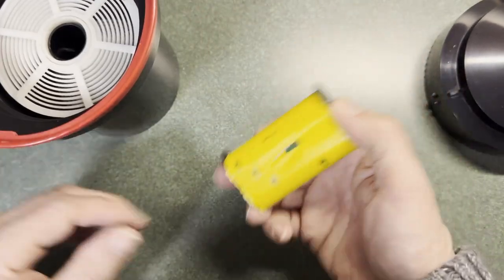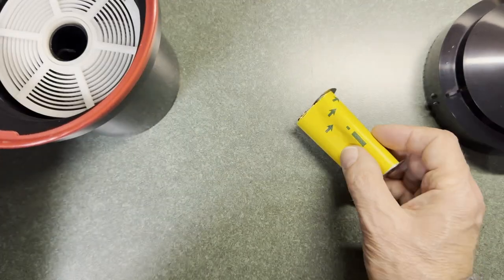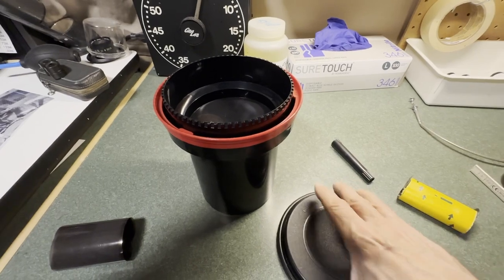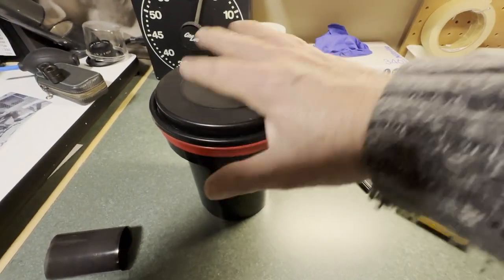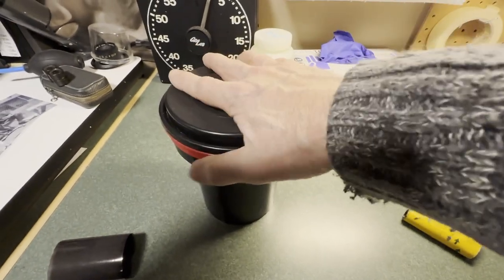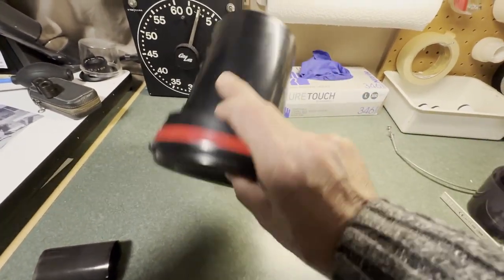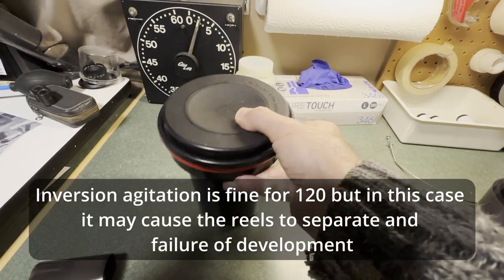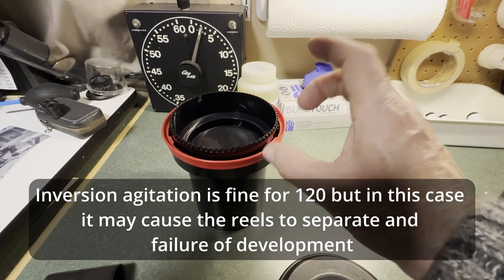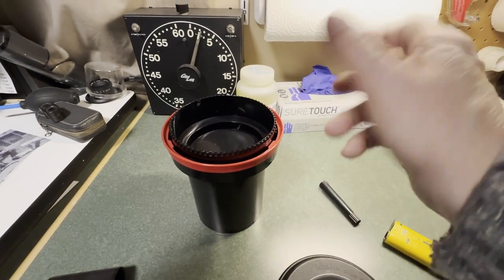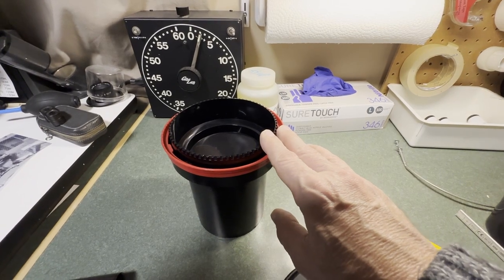I should also mention when you are agitating your film, it's very important that you don't do the inversion type agitation, because those spools are not locked together. If you invert it, I can pretty much guarantee your film is going to separate from the spool.